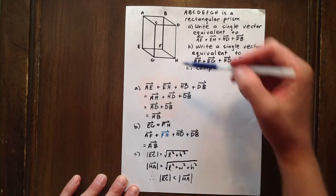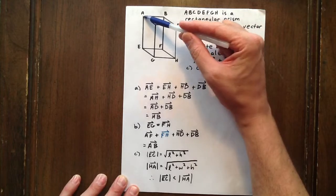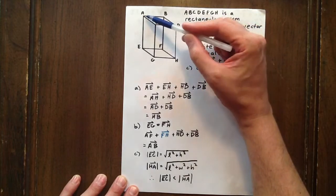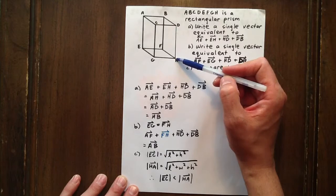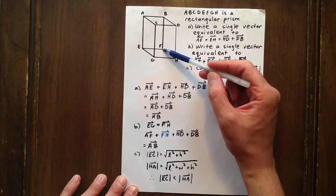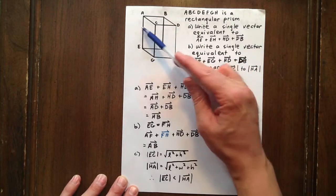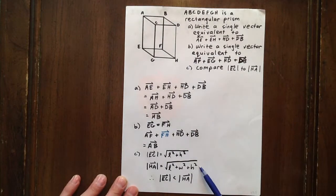Now how about the magnitude of HA? Straight across here. Well we have a three-dimensional Pythagorean theorem opportunity there. So we have L squared plus W squared plus H squared, square rooted.